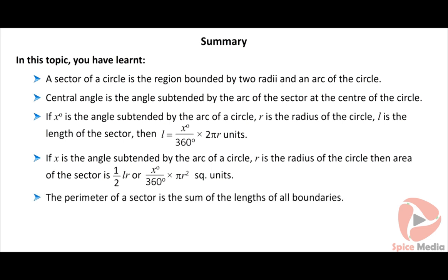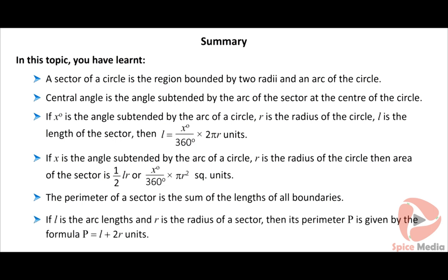The perimeter of a sector is the sum of the lengths of all boundaries. If L is the arc length and R is the radius of a sector, then its perimeter P is given by the formula P = L + 2R units.